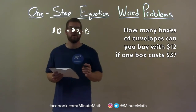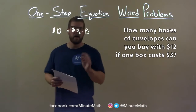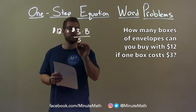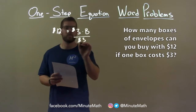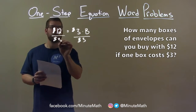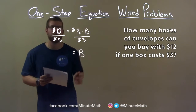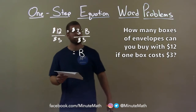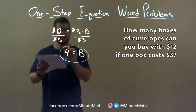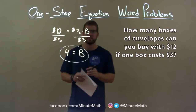Now let's solve for B. We're multiplying B by $3, so the opposite of multiplication is division. Divide both sides by 3, leaving B by itself. $12 divided by 3 is 4, so our final answer is 4 boxes of envelopes.